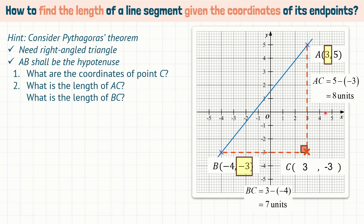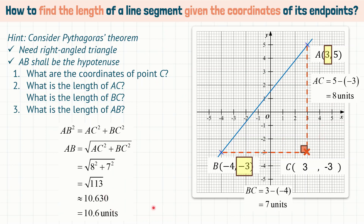Now that we have the length of AC and BC, we can find the length of AB by applying Pythagoras theorem: AB² = BC² + AC². Placing in the values, AB equals the square root of 113 units if left as an exact value, or 10.6 units when rounded to 3 significant figures (3SF).